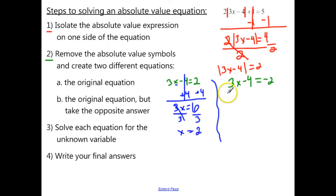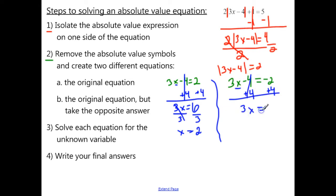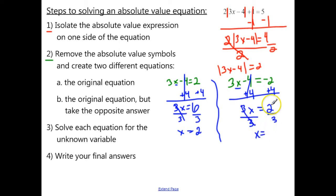Now let's solve the other equation. We need to isolate x, so first let's get rid of negative 4 by adding 4 to both sides. On this side we have 3x, and negative 2 plus 4 gives us a positive 2. Then we want to divide by 3, and we get x equals 2 thirds.